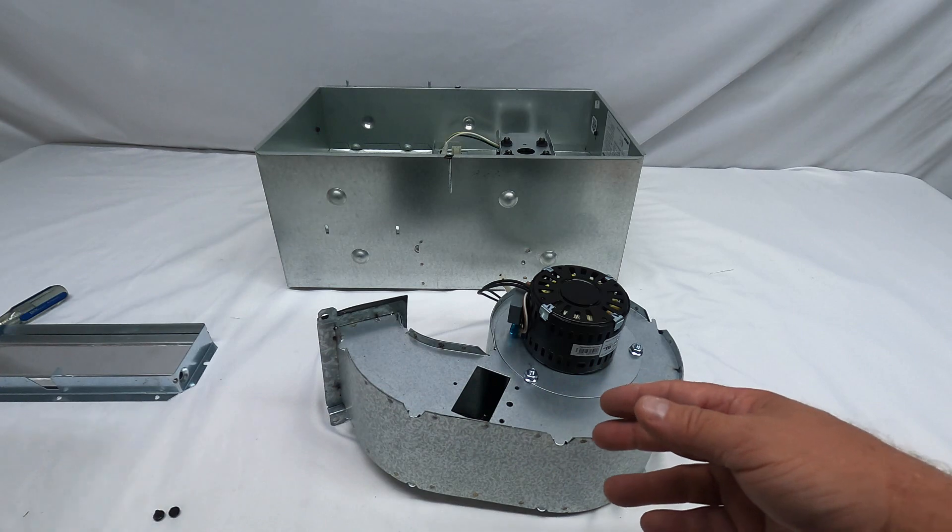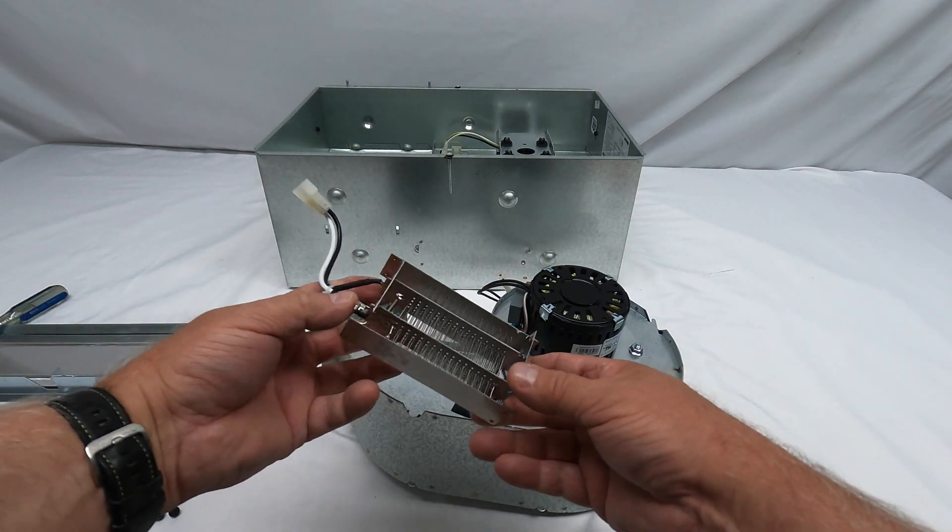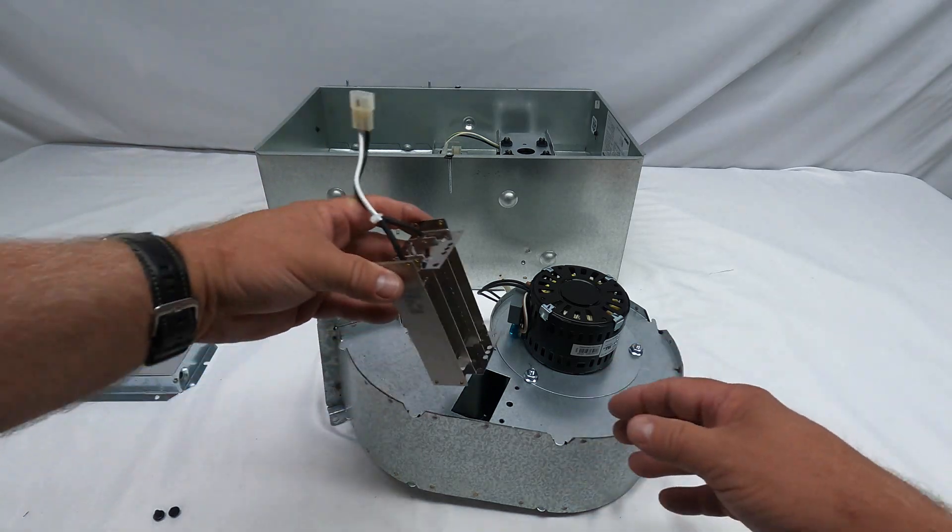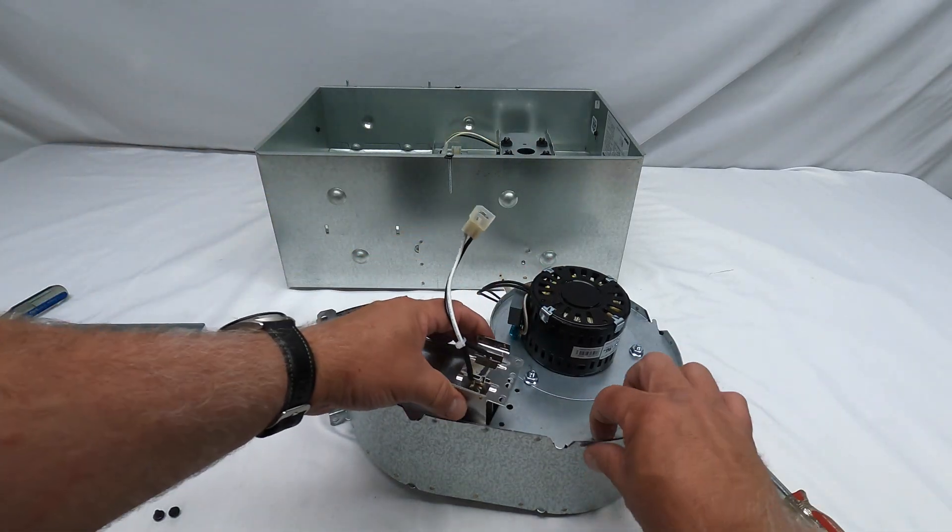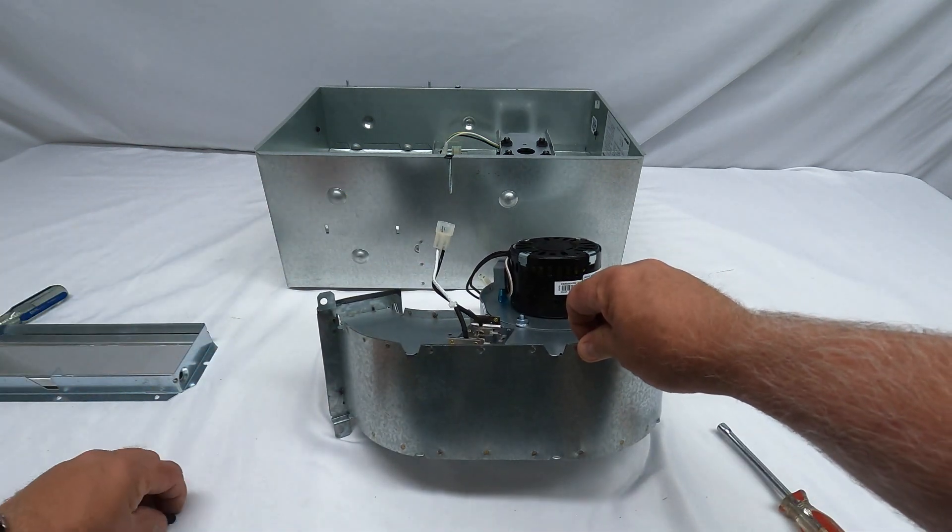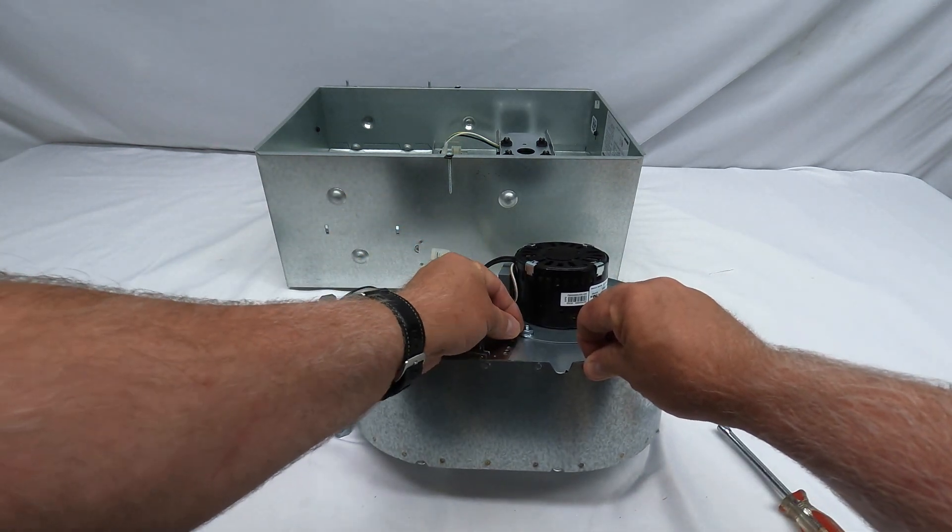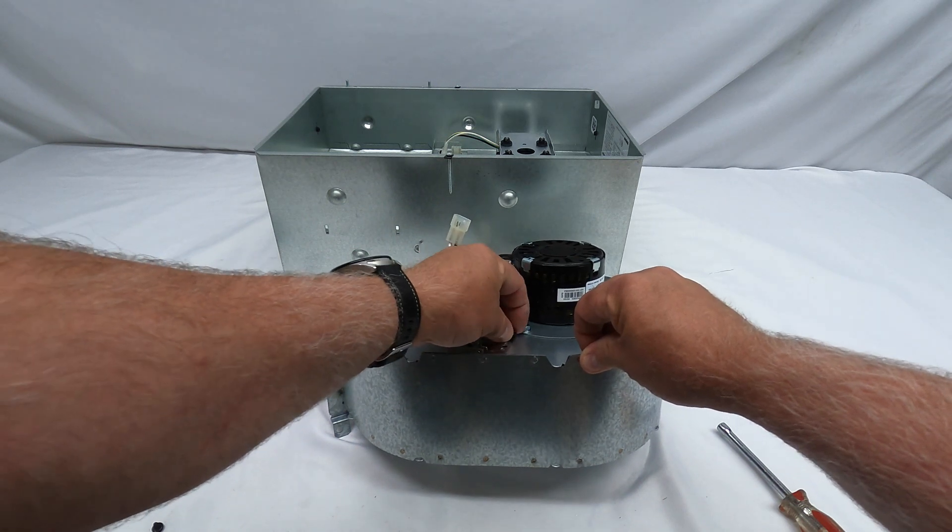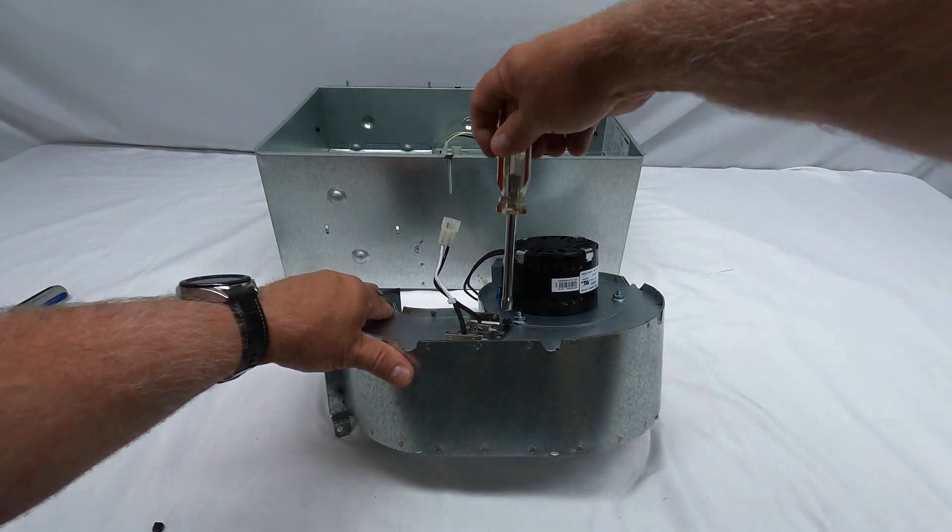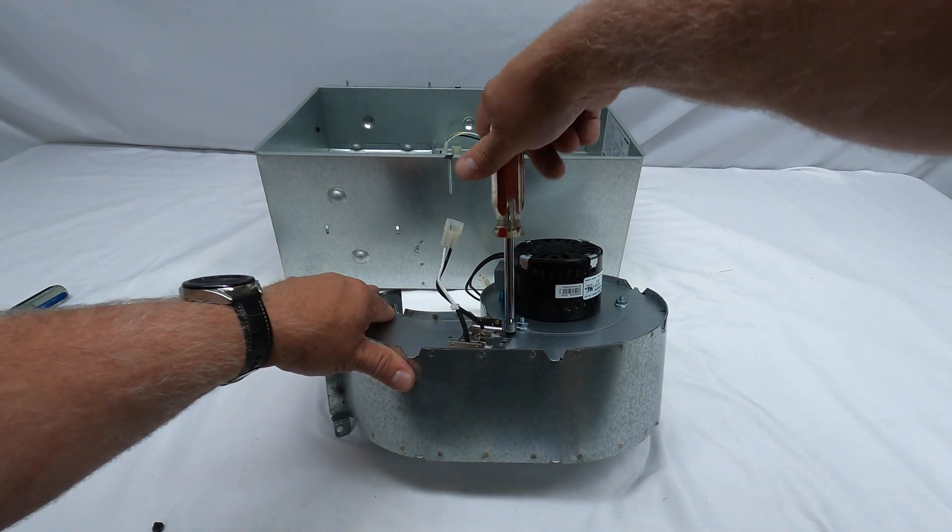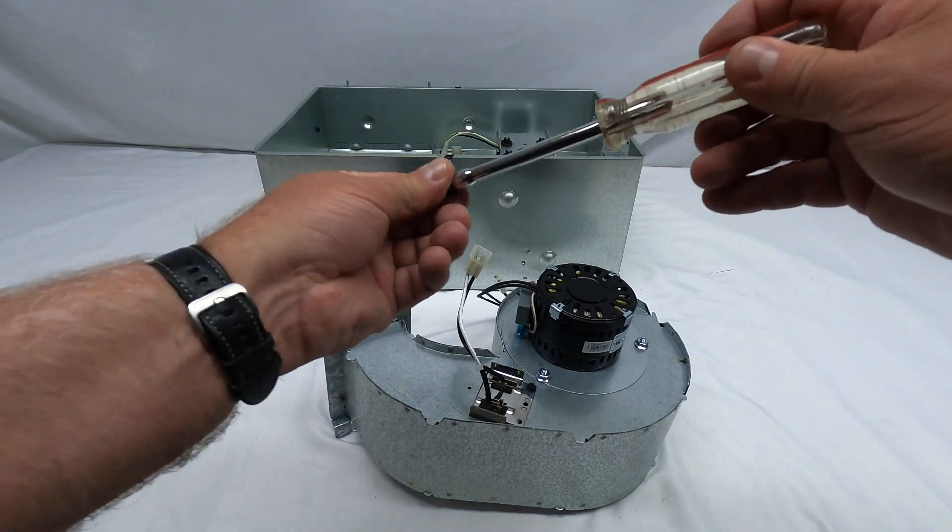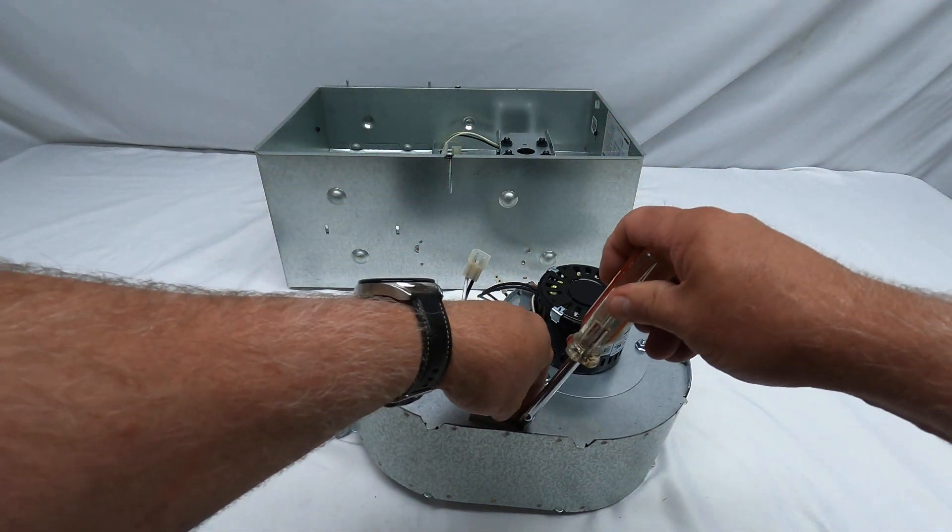You can take this one, throw it in the garbage, and replace it with the new one. Basically, you just do the reverse steps. You slide it in, put it in place, and put your screws back in. I'll go ahead and do that. So it's just two screws.